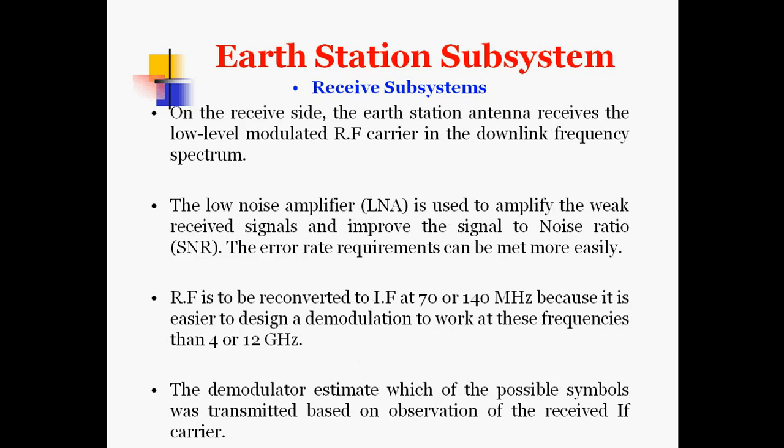At the receiver end, the earth station antenna receives the low-level modulated RF carrier in the downlink frequency spectrum. The low noise amplifier amplifies the weak received signal and improves the signal-to-noise ratio. Since we are receiving a signal from a far distance, noise gets included into the original signal, so the LNA amplifies the weak signals and improves the signal-to-noise ratio, making the error rate requirement easier to meet.